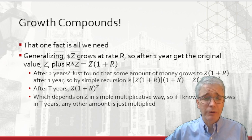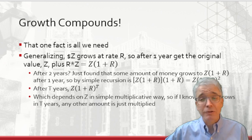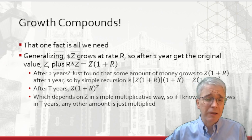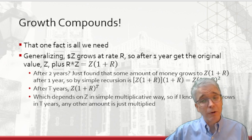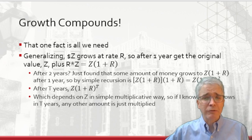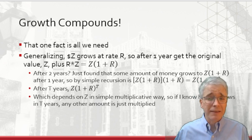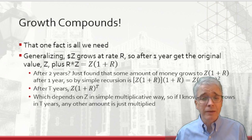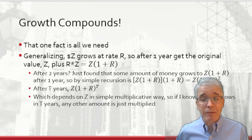Let's generalize a little bit. Say I have Z dollars and that's going to grow at a rate r. Instead of saying I have 10 million dollars in GDP growing at five percent, or 500 dollars in the bank growing at five percent, I'm saying I have Z dollars growing at rate r. After one year I have that percent increase — r times Z — plus the original value Z, so after one year of growing at rate r I have Z times (1 + r) dollars.